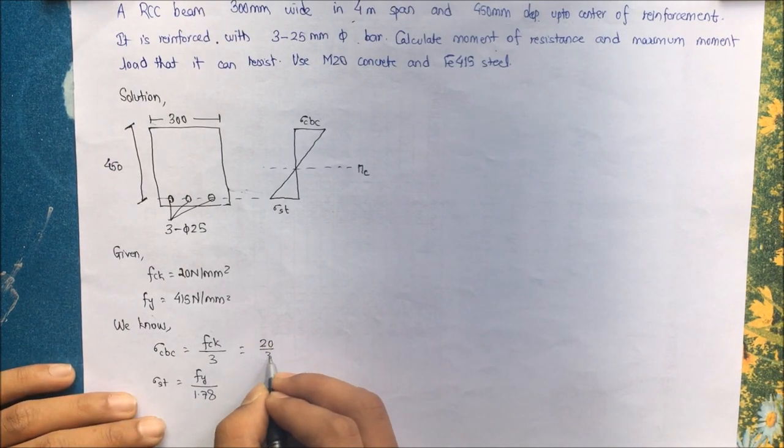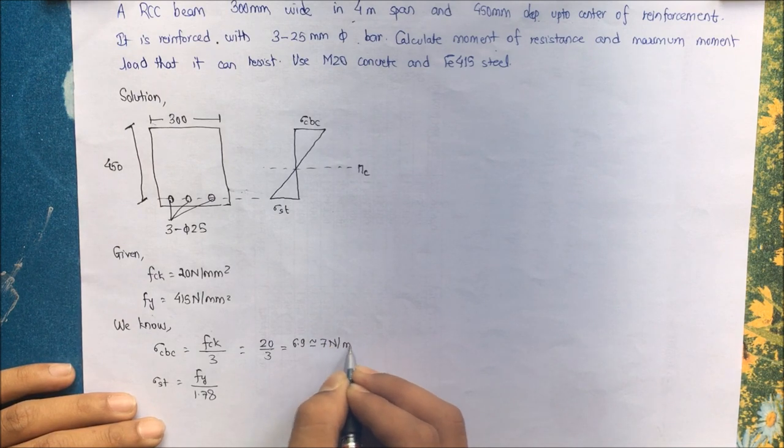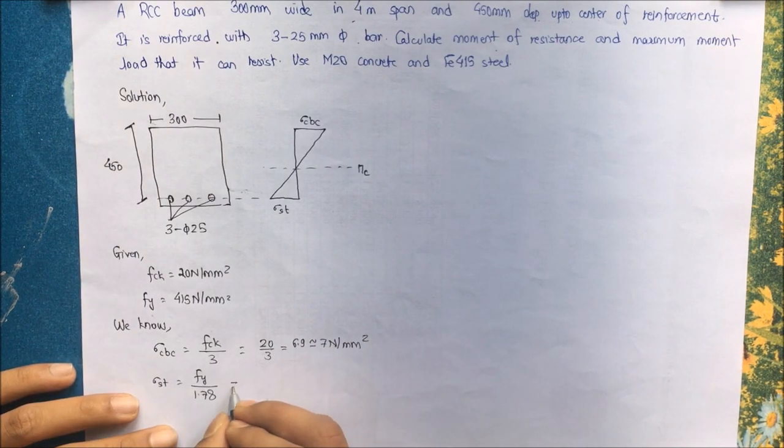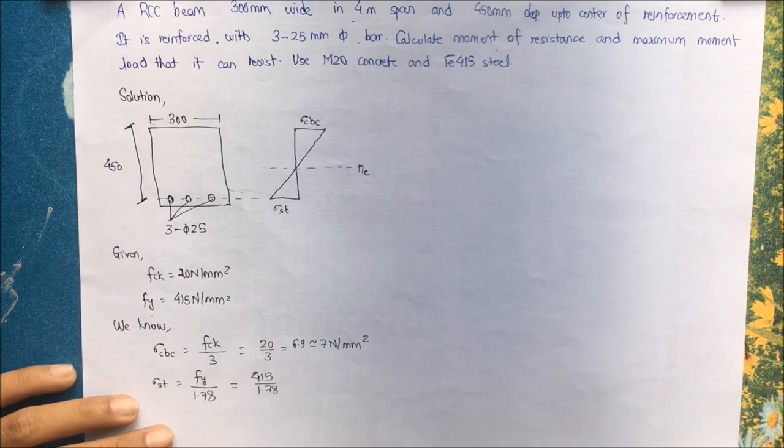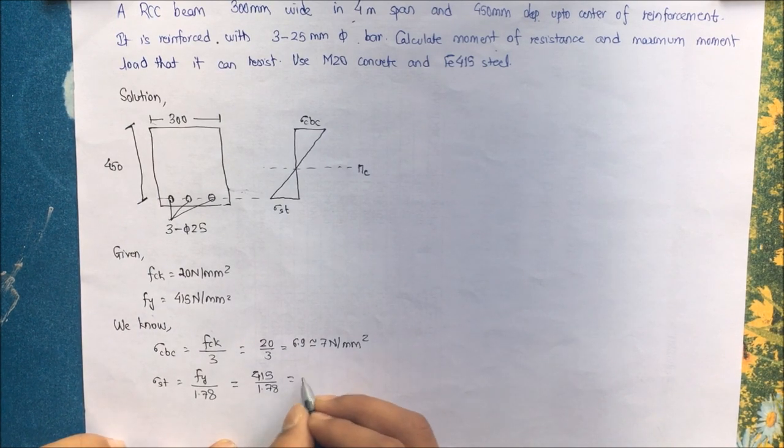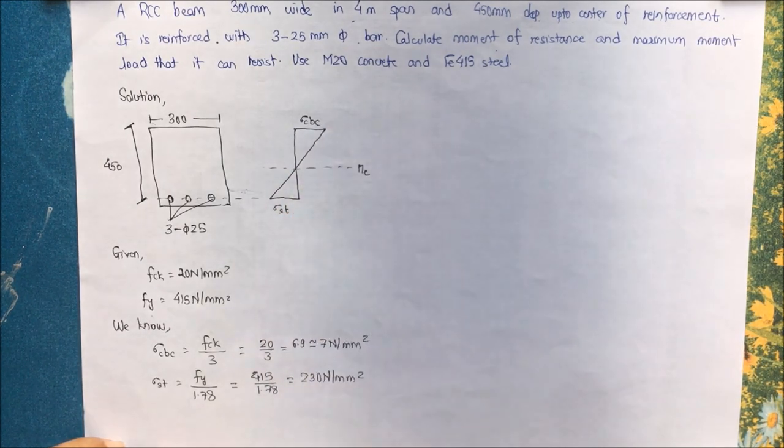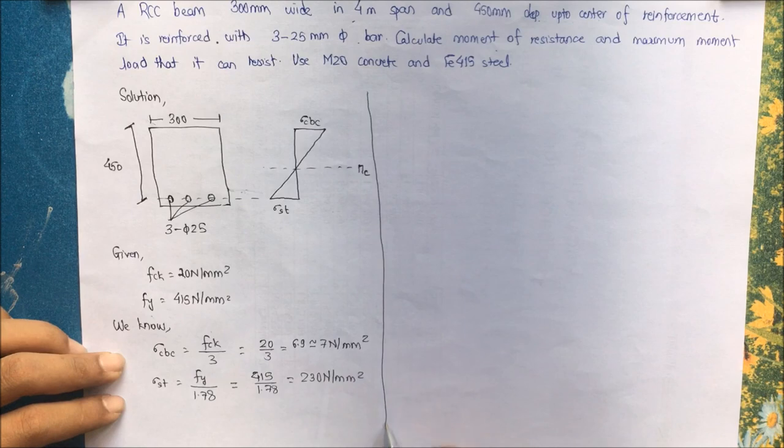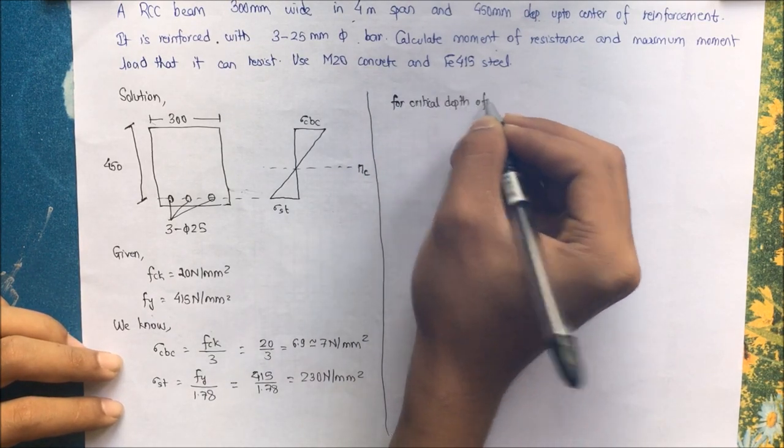Substitute the value 20 by 3, this comes as 6.9, nearly taking this as 7 Newton per mm square. Similarly, fy being 415 divided by 1.78, let me calculate this, this comes as 230 Newton per mm square. So we have got the value for these two: sigma cbc and sigma st for critical depth of neutral axis.